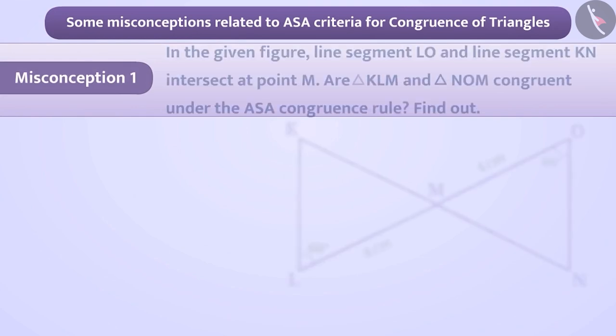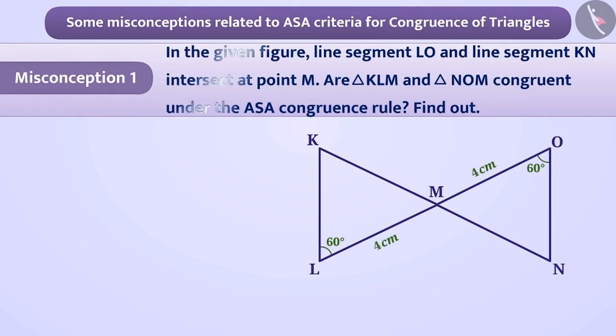Misconception 1. In the given figure, line segment LO and line segment KN intersect at point M. Are triangle KLM and triangle NOM congruent under the ASA congruence rule? Find out.